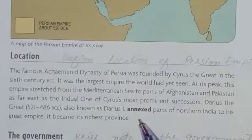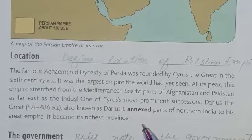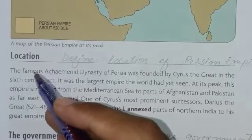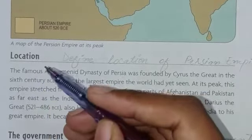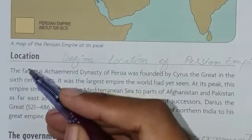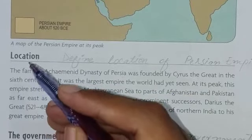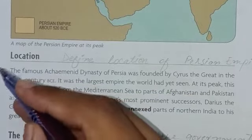Students, here a word is 'annexed,' which means 'took by conquest.' Now we can make a question here, which is already mentioned in your notes. The question is: define the location of the Persian Empire.